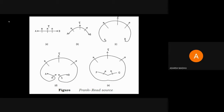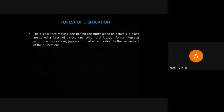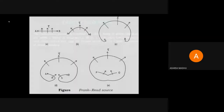This goes on repeating — it is a continuous process. You can see that the process forms another shape, like a circle or arc, and it goes on increasing and repeating. That particular process does not end — the dislocation keeps increasing and plastic deformation continues. This is the case of the Frank-Read source, which means dislocation is generated from an existing dislocation, and more dislocations and more deformation happen repeatedly.